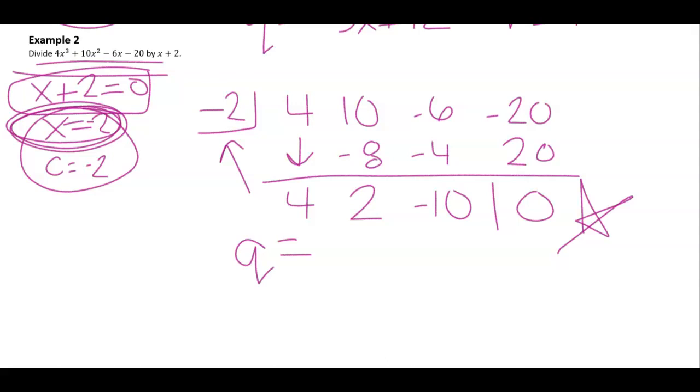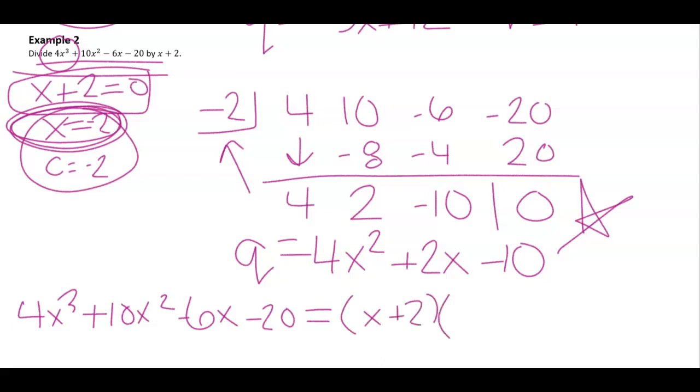Now, remember, we write our quotient doing 1 degree less. So we'll have 4x squared plus 2x minus 10. What that means is 4x cubed plus 10x squared minus 6x minus 20 must be equal to x plus 2 times this factor here with a remainder of 0. So this is one way we're going to start learning how to factor polynomials that are not quadratics.